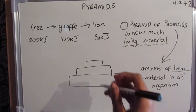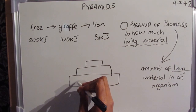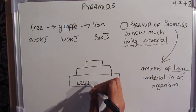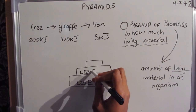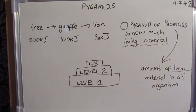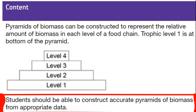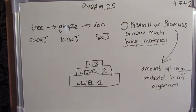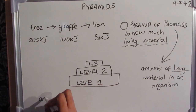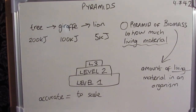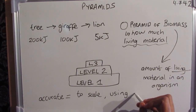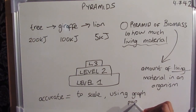We can add trophic levels to the pyramid of biomass. Trophic level one is at the bottom, trophic level two just above, and trophic level three at the top. The specification says students should be able to construct accurate pyramids of biomass from appropriate data — 'accurate' means to scale, which means you need to use graph paper.